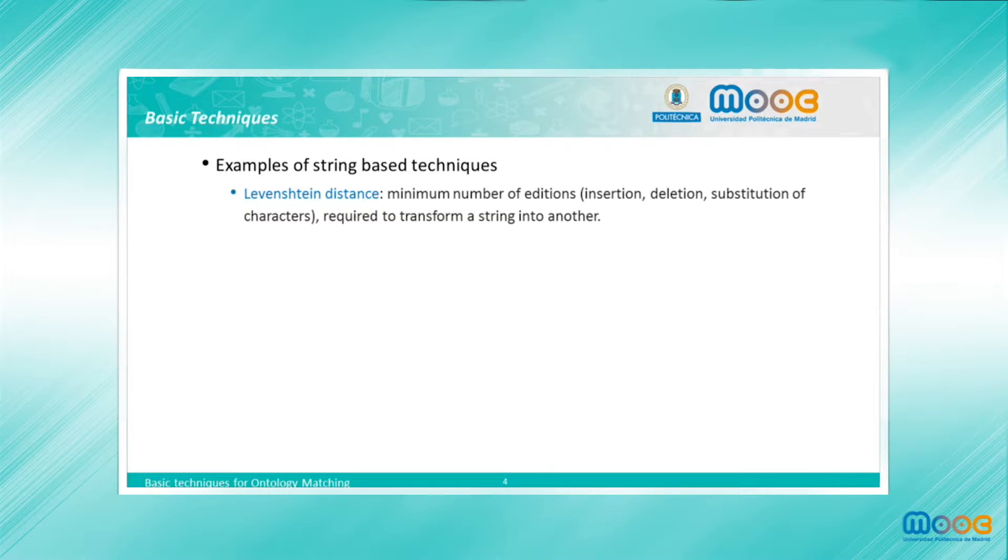One of them is the Levenshtein distance, which is a number that reflects the number of editions required to transform a string into another. For instance, the distance between book and books is one according to this metric, because it is needed one edition, the insertion of a character, to transform book into books.